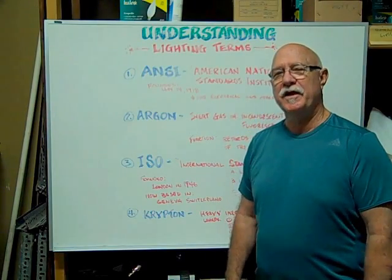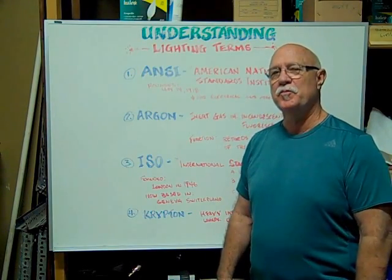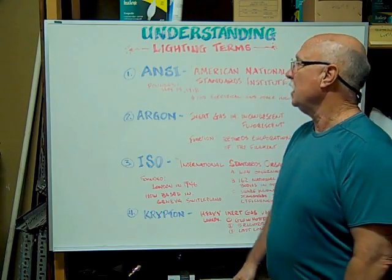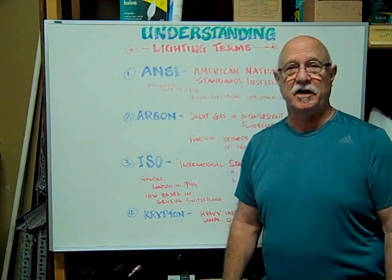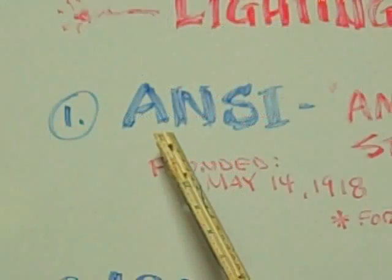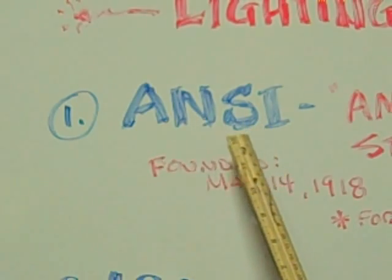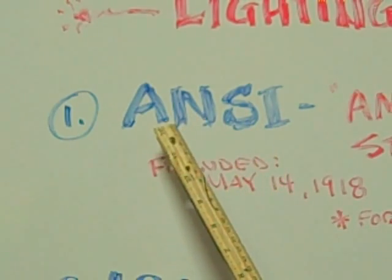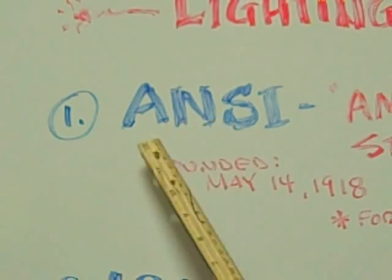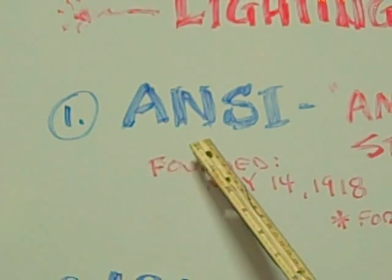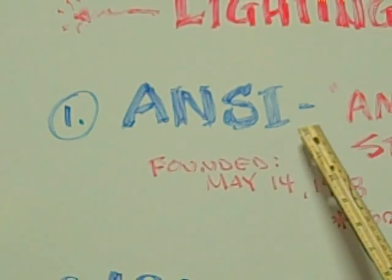Hi. Here at Bulbtown, we want to help you understand lighting terms and terminology. The first term we're going to look at is ANSI. You'll see this when you're looking for a light bulb and someone mentions ANSI or an ANSI code. What that stands for is the American National Standards Institute.